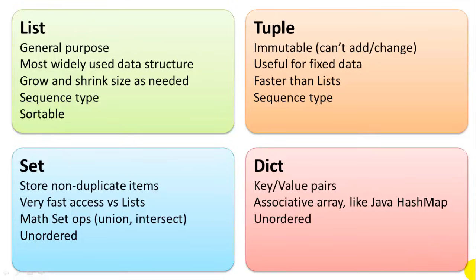And one amazing thing about these data structures in Python is that they can hold any data type. So they can hold integers, floating point values, strings, or other object types, and even other lists, tuples, sets, and dictionaries. And the data types don't have to be homogeneous. So you can mix and match data types within a single list, or within a set, or within a dictionary.